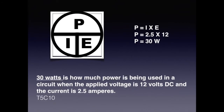For the next question, we are also solving for P. We are given the values of 12 volts and 2.5 amps. We know that P equals I times E. So we plug in the values and multiply 2.5 times 12 and get 30. Since we are solving for power, it is expressed in watts. For the exam, know that 30 watts is how much power is being used in a circuit when the applied voltage is 12 volts DC and the current is 2.5 amperes.